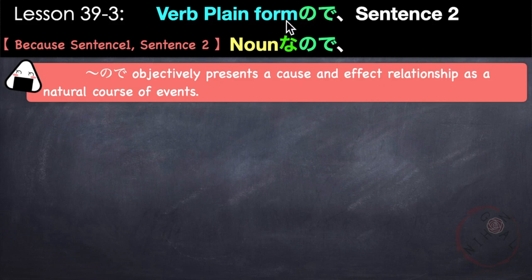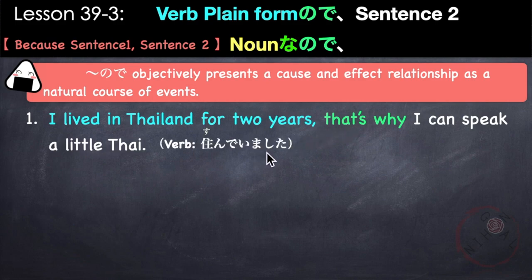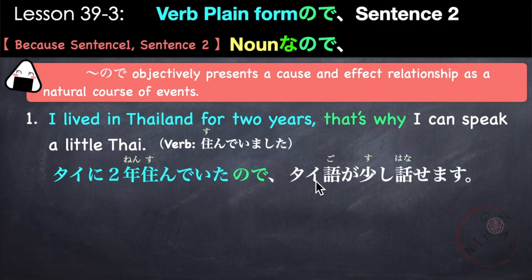For verbs, use the plain form followed by ので. For nouns, add な followed by ので (noun なので). Example: タイに2年住んでいたので、タイ語が少し話せます。 I lived in Thailand for two years, so I can speak a little Thai. Sundeimashita plain form is sundeita, followed by ので.